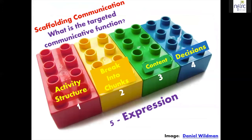In terms of a process for scaffolding interpersonal communication, you need to ask yourself: what is the targeted communicative function? Then make a series of choices I've listed as A, B, C, D, E. If I know my communicative function, what activity structure am I going to use — inside-outside circles, a debate, pros and cons? Step two: how can I take that task and break it into smaller chunks? Step three: how do I scaffold the content? Step four: how can I scaffold the decisions students need to make? Step five: how can I scaffold students' expression or production of language about this content?